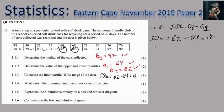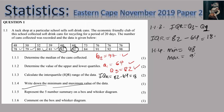Question 1.1.4 says write down the minimum and maximum value of the data set. The minimum value is the smallest value, which is 48. The maximum value is the largest value, which is 98. Then the question asks us to represent the five-number summary on a box and whisker diagram.